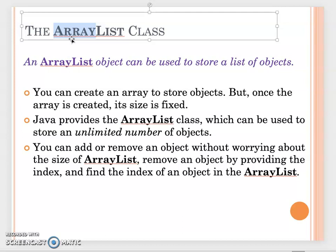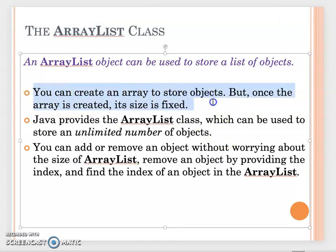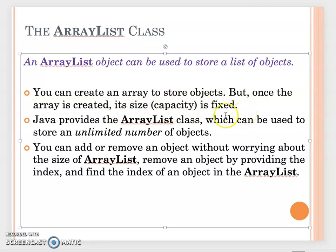Once you declare an array object, the capacity is fixed — even if you don't have enough space, you cannot enlarge it. But in Java we also have another class called ArrayList. An ArrayList object can be used to store a list of objects, and the most important thing is that it is automatically resized.